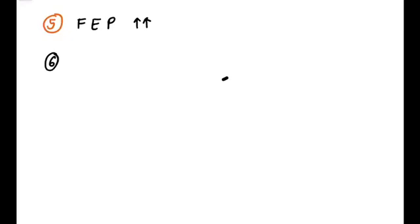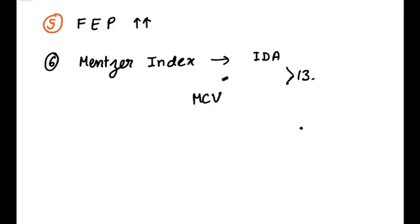Sixth method of diagnosis is Mendel index. In iron deficiency anemia, Mendel index is greater than 13. What is this index? This is the ratio of MCV and RBC count.